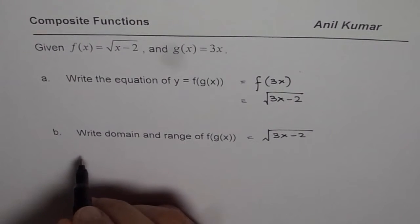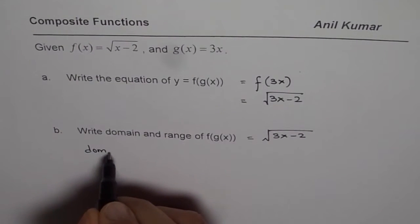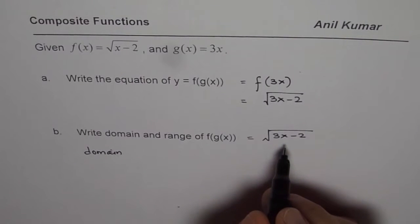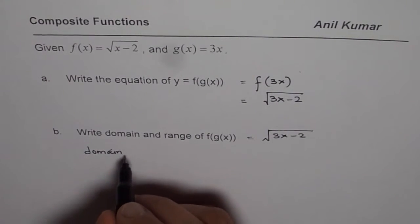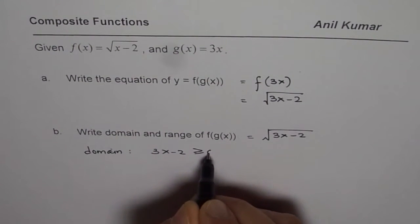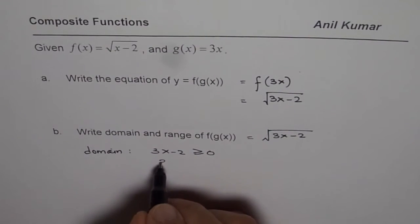Now the domain of this function should be that within the radical sign, the square root sign, we should always have a non-negative number. So to calculate the domain, we can equate 3x minus 2 to greater than or equal to 0 and solve for x.